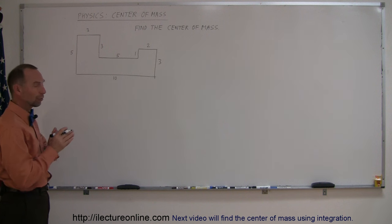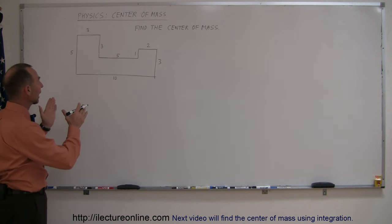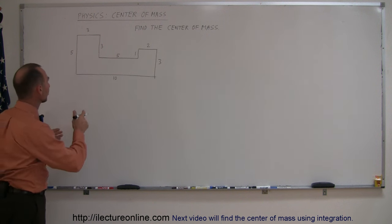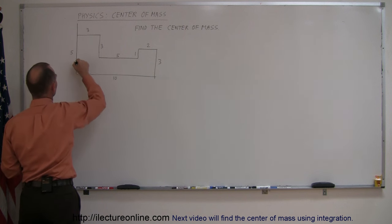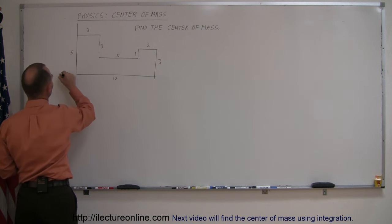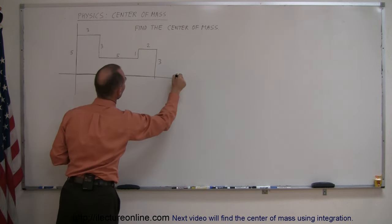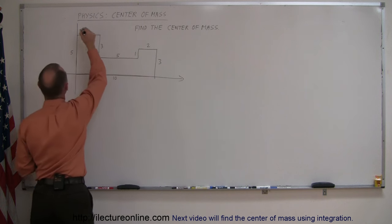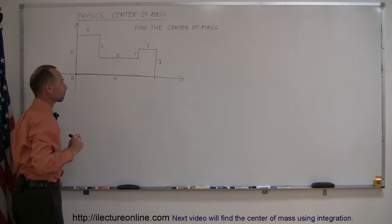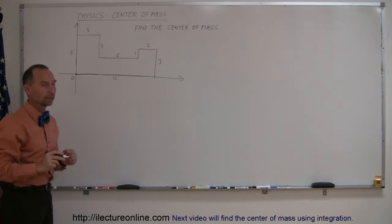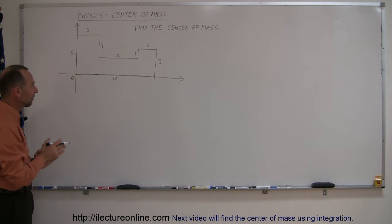Well, the best thing to do is, first of all, place it somewhere on a coordinate system. So we're going to make this the y-axis right here and make this the x-axis, which means that one corner of the object will be placed right at the origin. Now at least we have a frame of reference.